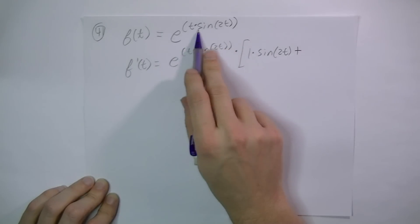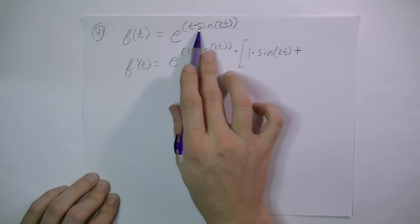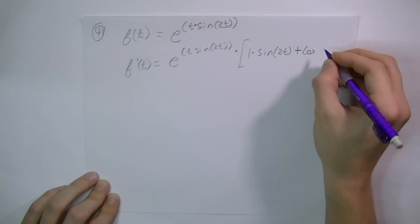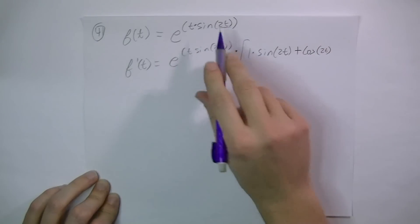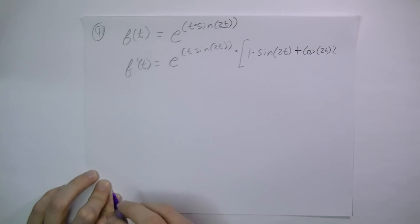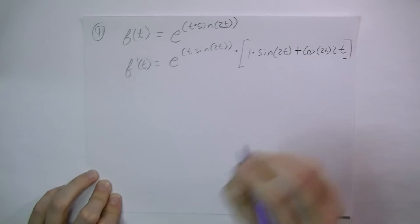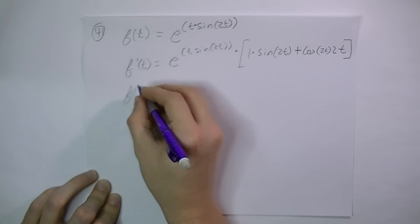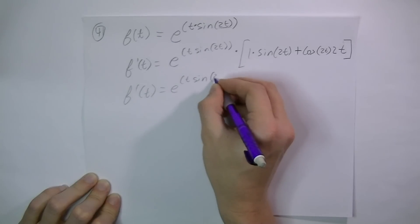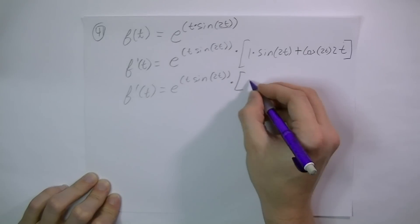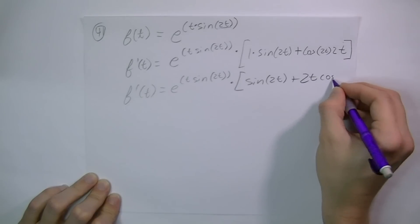Then I add. This time I take the derivative of sine 2t. I need to use the chain rule because the argument is 2t, not x. The derivative of sine is cosine, the inside stays the same, and then I multiply by the derivative of the inside — the derivative of 2t is just 2. Then I also multiply by the first term staying the same. So f prime of t equals e to the t sine 2t times quantity sine 2t plus 2t cosine of 2t.